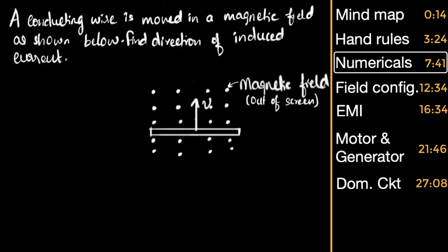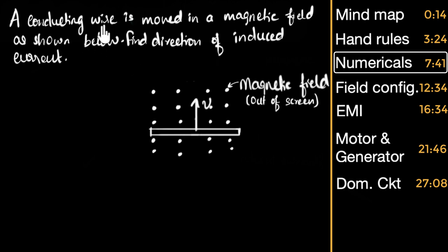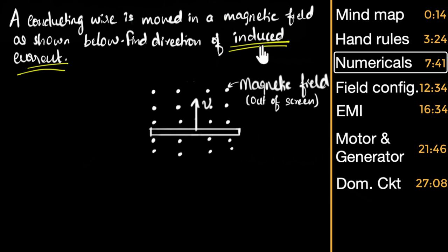Let's go to the second numerical. A conducting wire is moved in a magnetic field as shown. Find the direction of the induced current. The magnetic field this time is coming out of the screen. Should I use my right hand generator rule? The question says 'find the direction of induced current' — somebody is applying a force, pushing or pulling that wire, and because of that a current is being induced. This is generation, so I'm going to use my right hand generator rule because current is being generated.